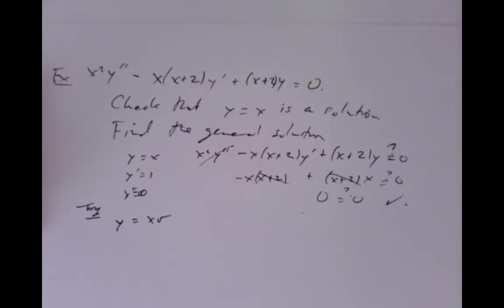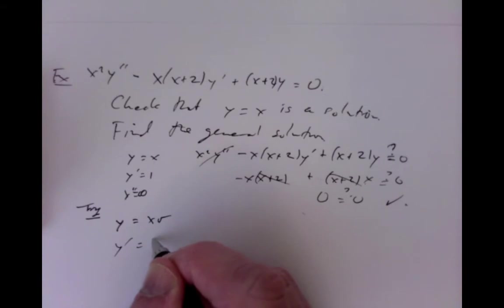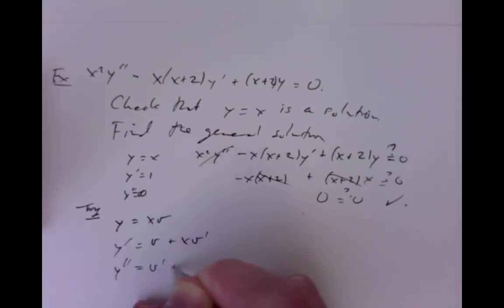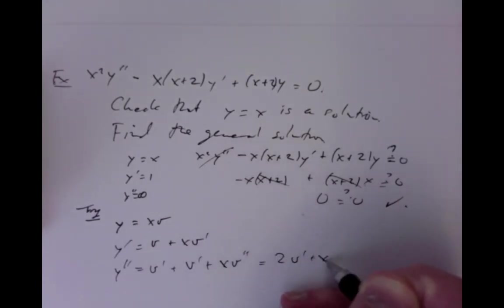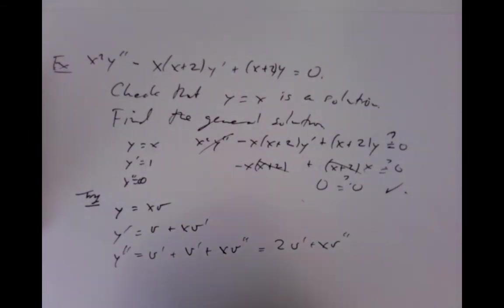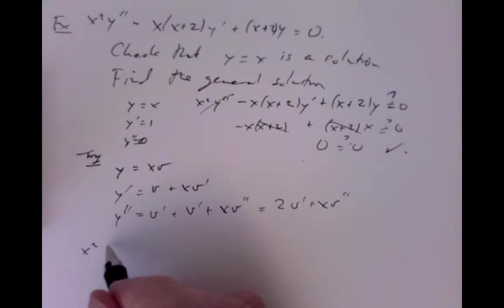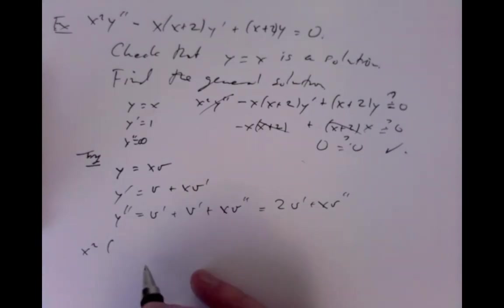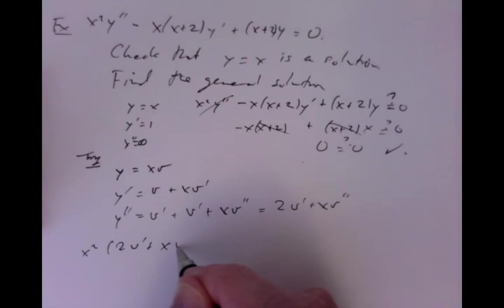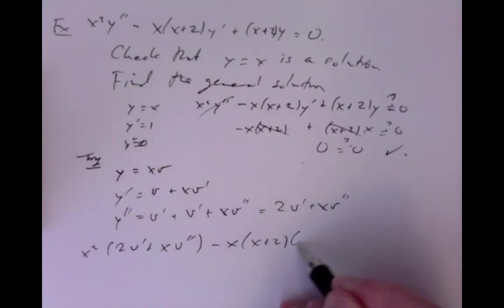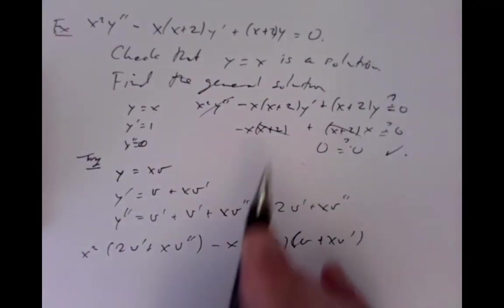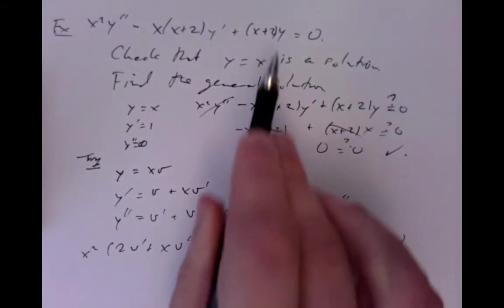Computing the derivatives: y' = v + xv', and y'' = 2v' + xv''. Now we plug into the differential equation: x²(2v' + xv'') - x(x+2)(v + xv') + (x+2)(xv) = 0. We want this to equal 0, so I'll put a question mark to indicate we're checking.